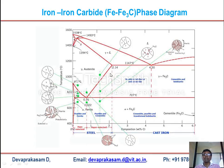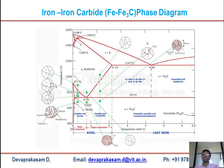If the carbon percentage is less than 2.14 weight percentage, these phases are called steel. In steel, the carbon percentage must be below 2.14%. If the carbon is anywhere above 2.14% and up to 6.7%, it is called cast iron.